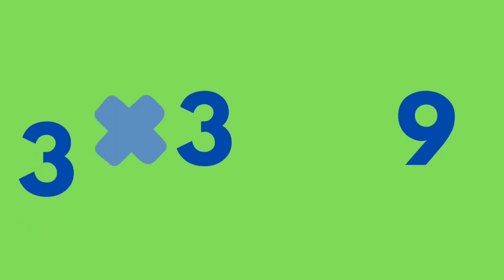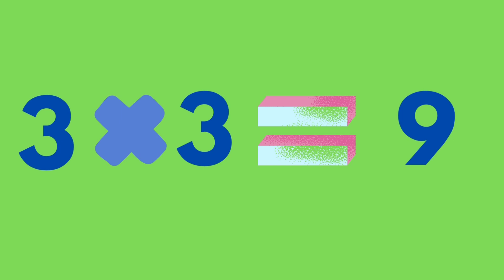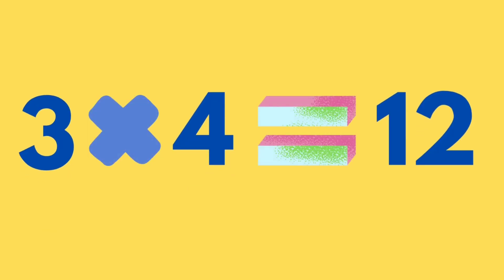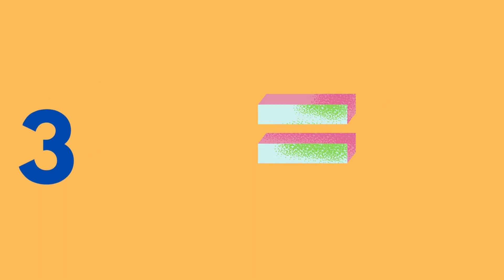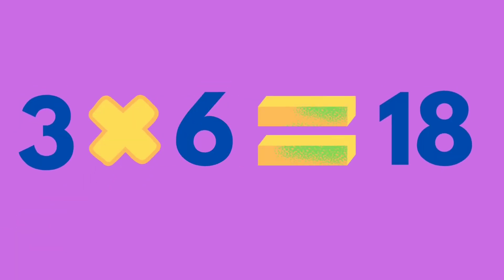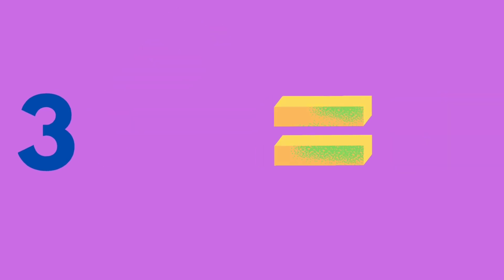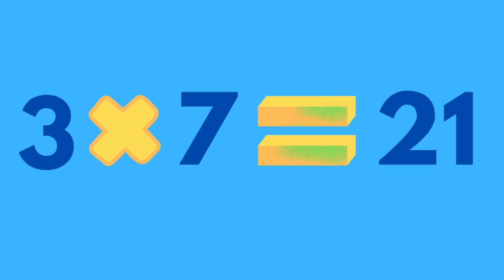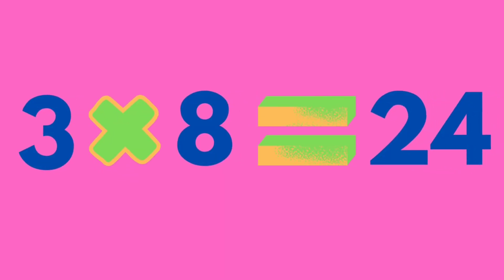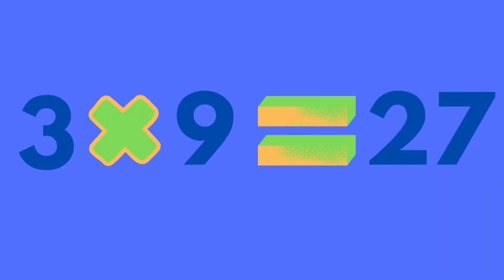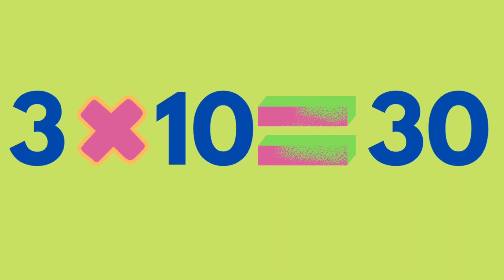3 times 3 is equal to 9. 3 times 4 is equal to 12. 3 times 5 is equal to 15. 3 times 6 is equal to 18. 3 times 7 is equal to 21. 3 times 8 is equal to 24. 3 times 9 is equal to 27. 3 times 10 is equal to 30. Let's see the summary.